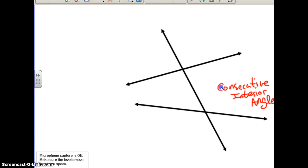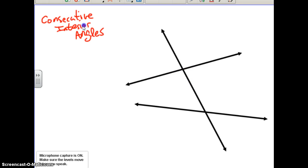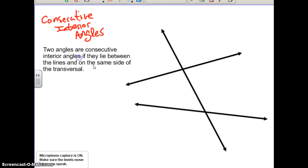So the fourth and final angle pair that we're going to talk about are called consecutive interior angles. These are two angles that are consecutive interior angles if they lie between the lines and on the same side of the transversal.